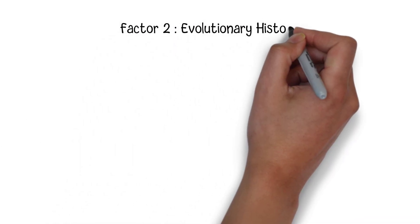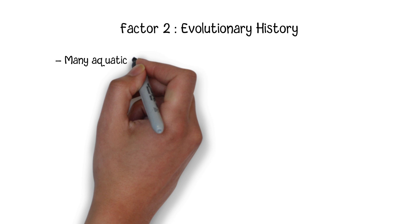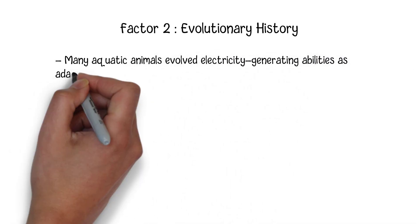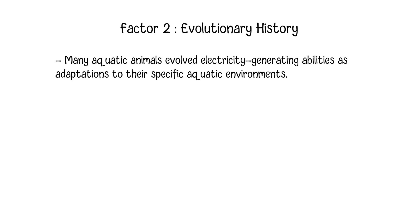Factor 2: Evolutionary History. Many aquatic animals evolved electricity-generating abilities as adaptations to their specific aquatic environments. These adaptations may not have been as advantageous or feasible for terrestrial animals due to differences in habitat, predator-prey dynamics, and other ecological factors.